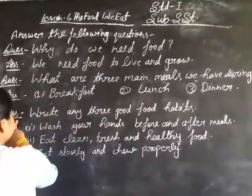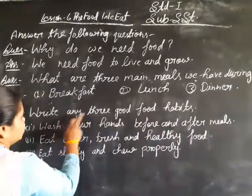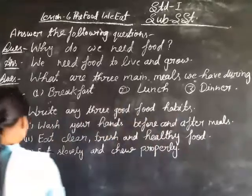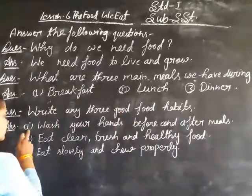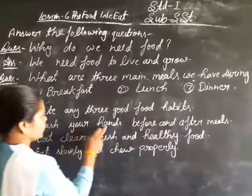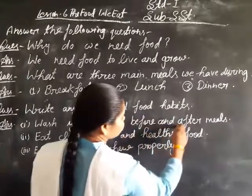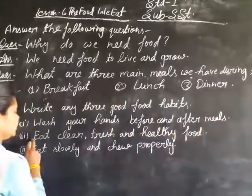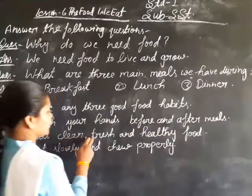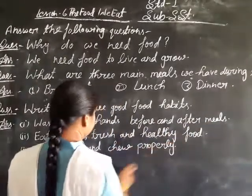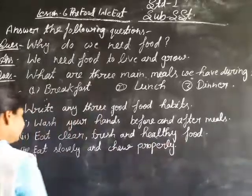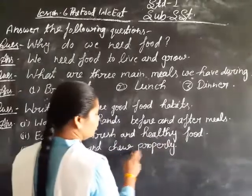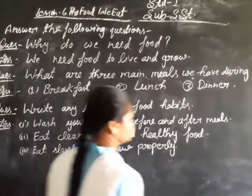Question number three: write any three good food habits. Answer: first, wash your hands before and after meals. Second, eat clean, fresh and healthy food. Third, eat slowly and chew properly. Homework.